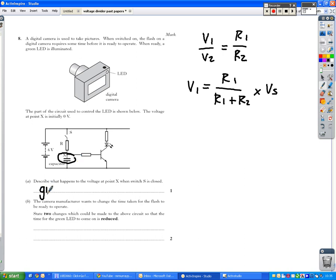Describe what happens to the voltage at point X when switch S is closed. Well, in a capacitor, the voltage charges up to the full voltage of the supply. How fast or how slow it does that depends upon your sizes of resistance and capacitance. So it gradually rises to whatever the supply voltage is here, six volts. So it gradually rises to six volts.